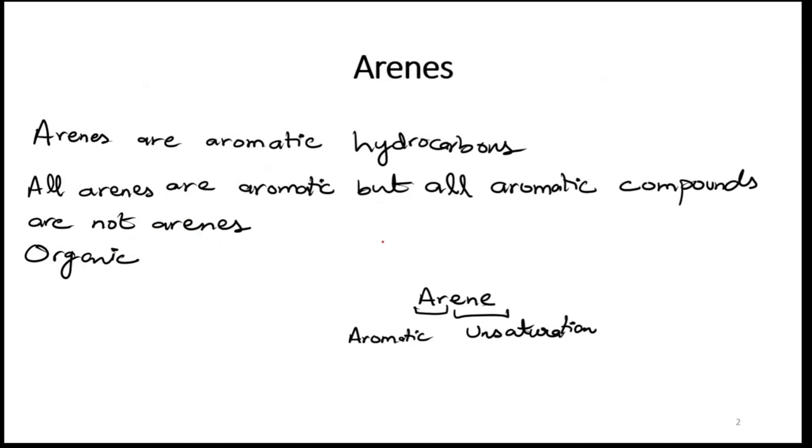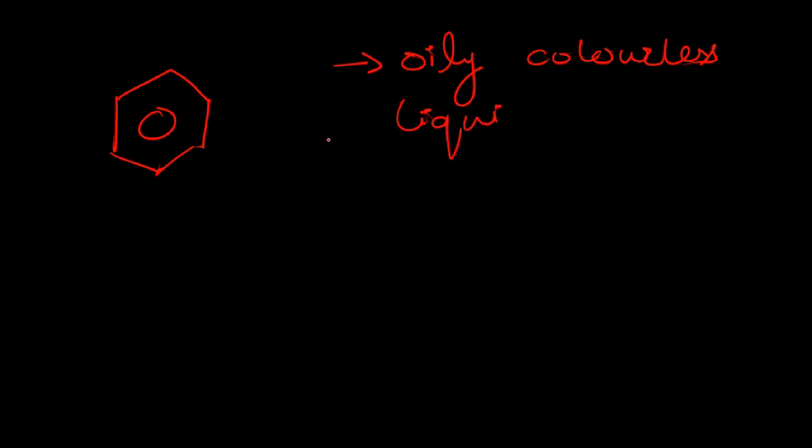In the previous chapter, we talked about benzene. This is the structure of benzene. Benzene is oily, colorless, and liquid at room temperature. It is immiscible with water as hydrogen bonds are not made by it.